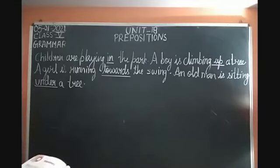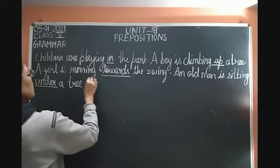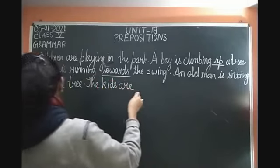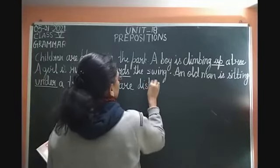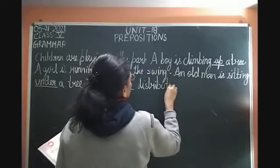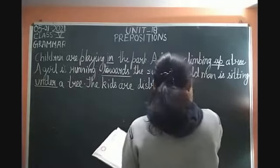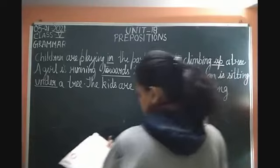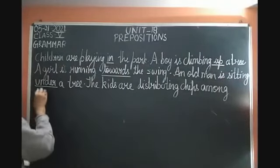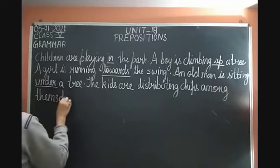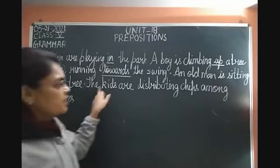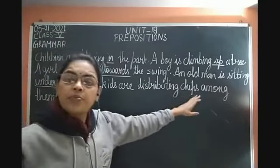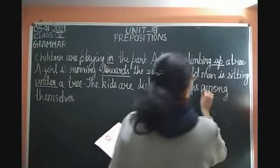So 'under' is again a preposition. Then, the kids are distributing chips among themselves. Kids and themselves — again two nouns. They are distributing chips among themselves. So 'among' is the preposition.